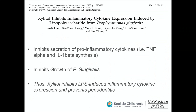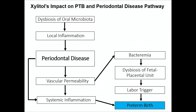Independently of inhibiting Porphyromonas gingivalis growth, xylitol also dampened the pro-inflammatory cytokine cascade through two specific mechanisms. Mapping this onto the proposed pathway: xylitol prevents dysbiosis of the oral microbiota — it's considered a prebiotic because it prevents bad bacteria from growing while helping good bacteria.